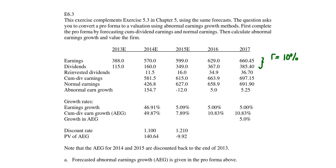So your first step is to calculate your reinvested dividend. For example, for year 2013, you issued a dividend of 115 million. What if the firm reinvested this dividend and generated the same amount of return? The reinvested dividend amount will be 115 times 10%, that is 0.10.